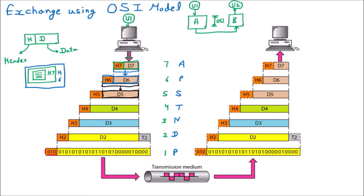The session layer adds header H5 - again, one more envelope is applied. This is the logical envelope example I'm using to explain encapsulation. This whole thing is now becoming the data D5 and is transferred to the next layer.